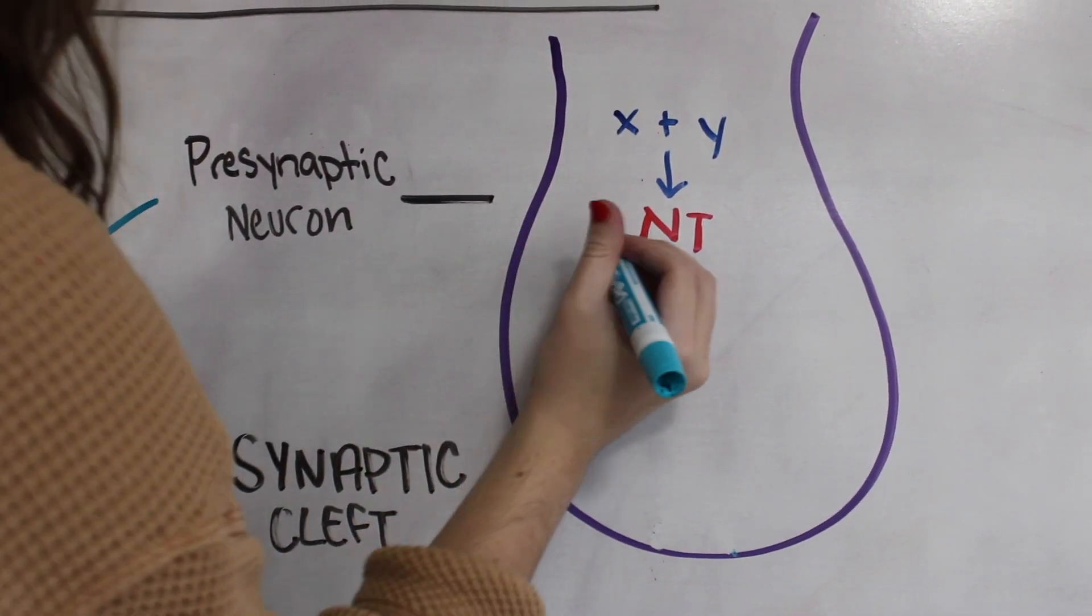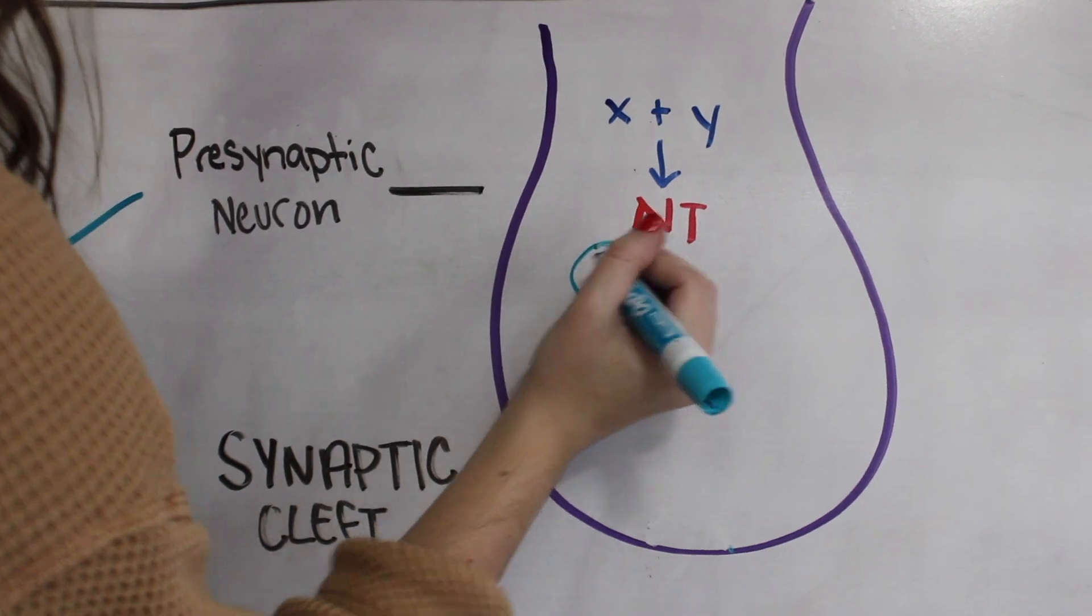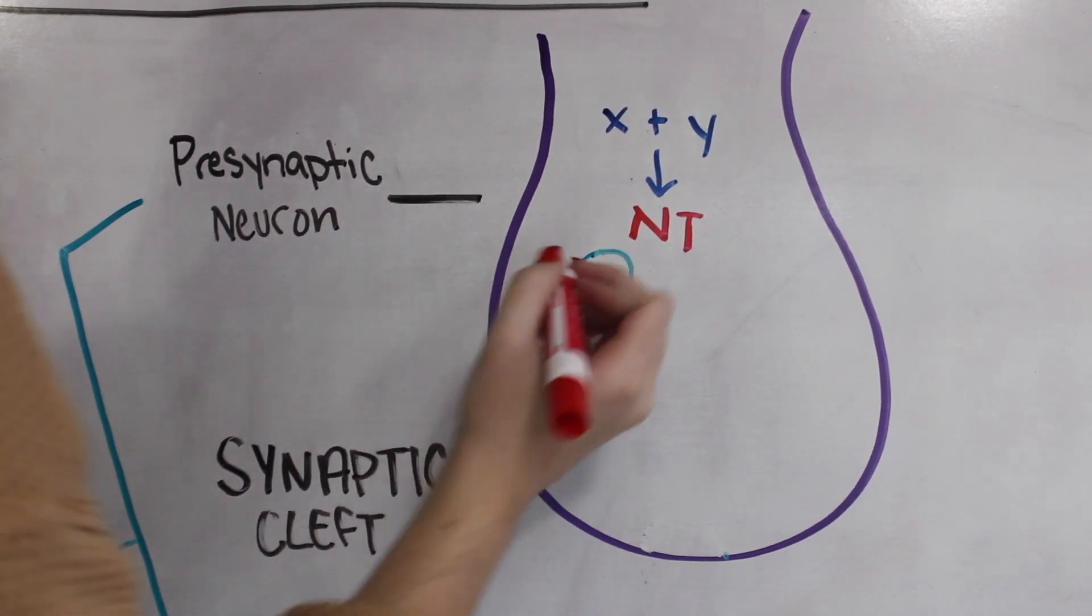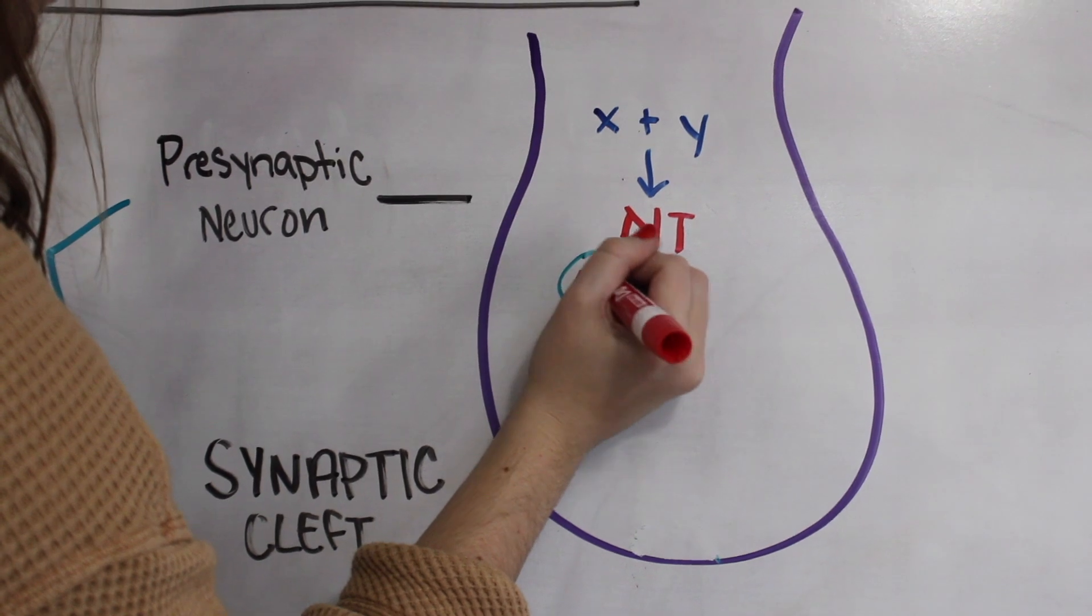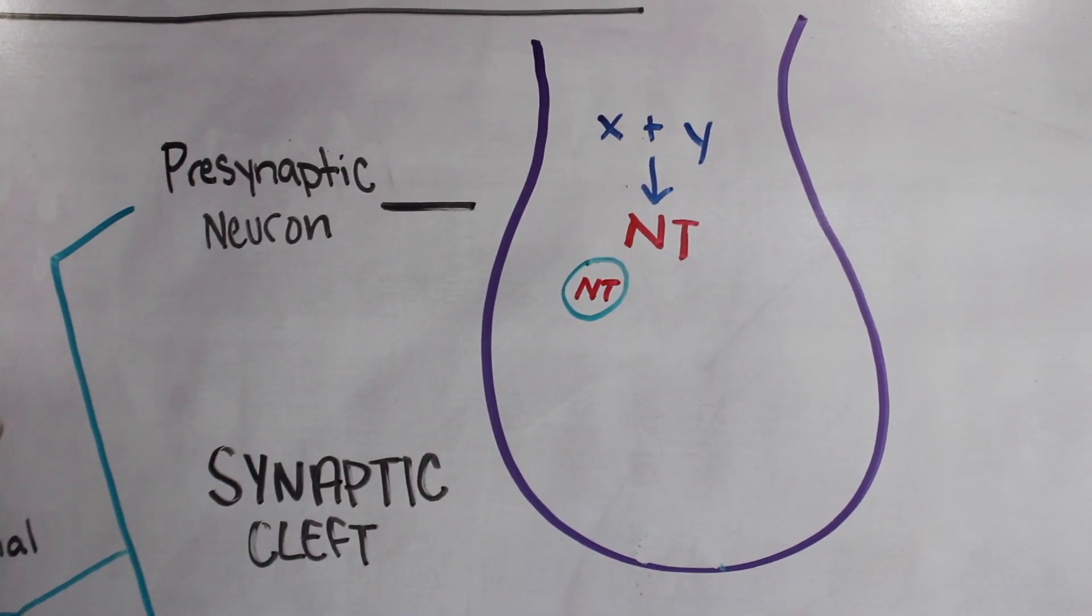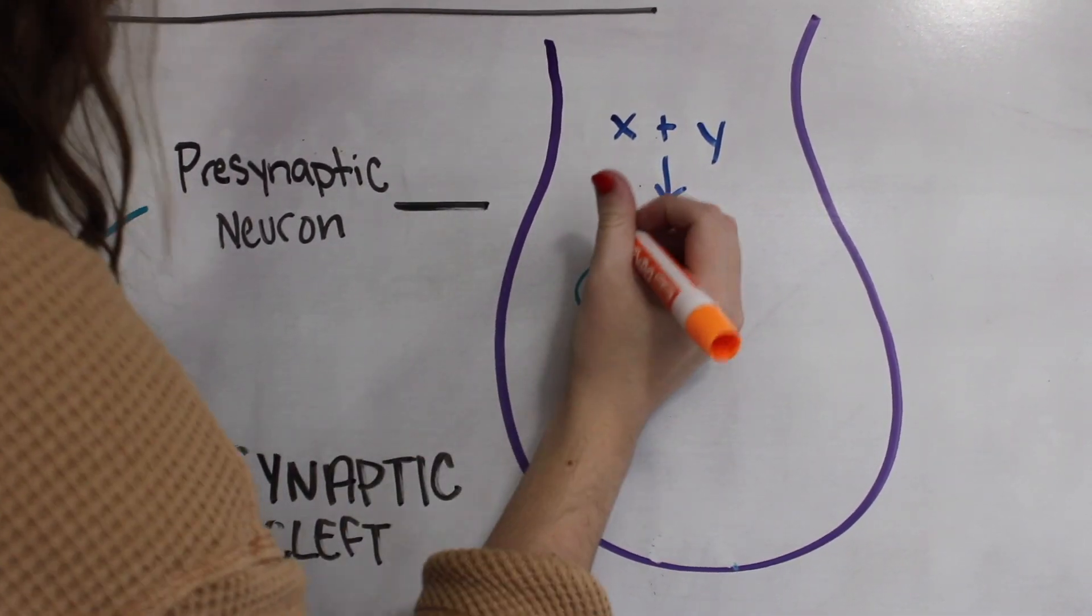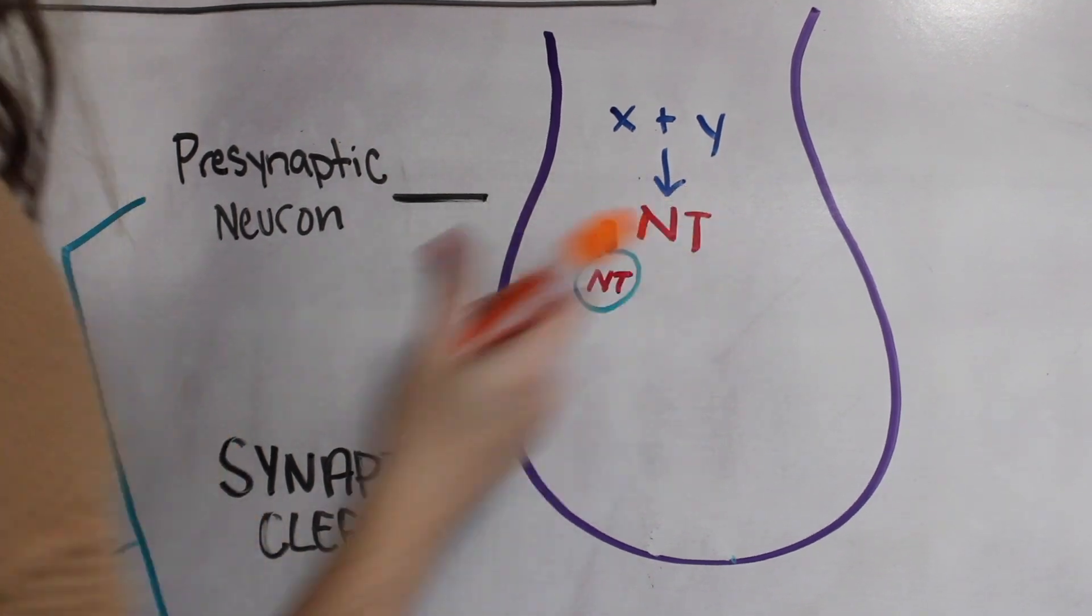The next step is called storage. In this step thousands of neurotransmitters are packaged into these little containers within the presynaptic neuron that are called synaptic vesicles. They will remain in these synaptic vesicles until they are ready for release into the synaptic cleft.